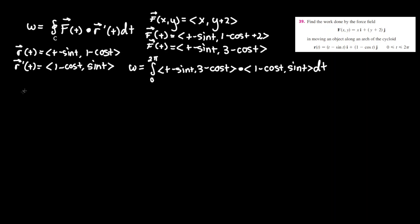Evaluating only the integrand portion we can see that work equals the integral between 0 and 2 pi of, let's take the dot product, we're taking it between t minus sine t and 1 minus cosine t since those are both the x or i direction.